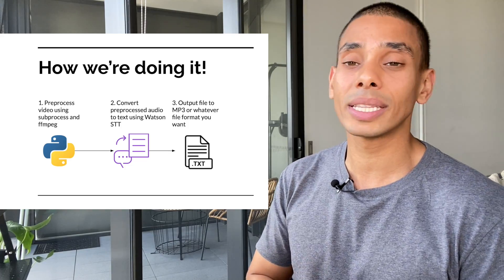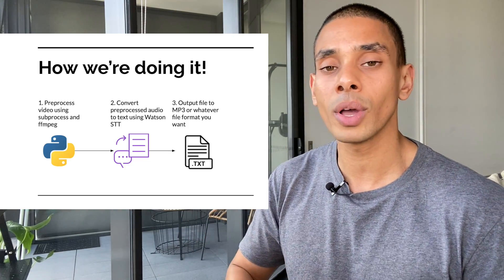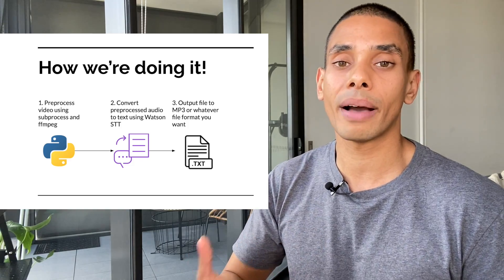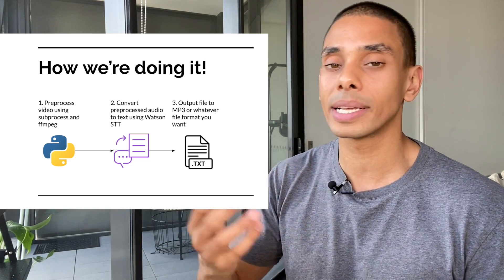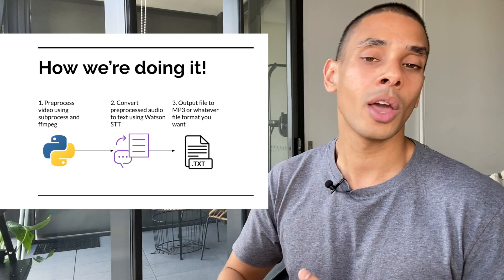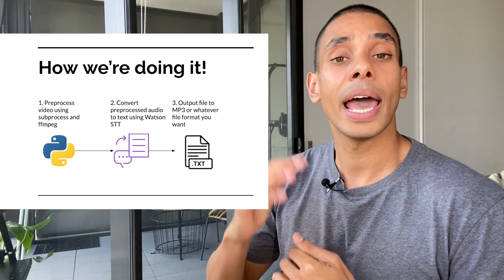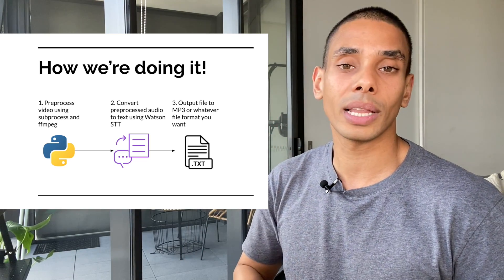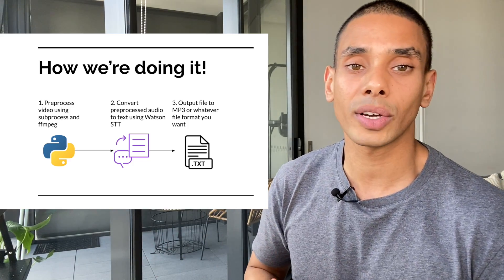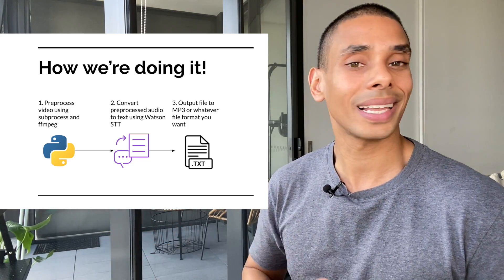In terms of how we're going to be doing this, we're going to be mainly working inside of a Jupyter notebook. We'll first start out by extracting our audio from our video that we've already downloaded using the YouTube DL functionality, then convert it using the Watson speech to text service, and last but not least, push that out using native Python functionality to create a text file.